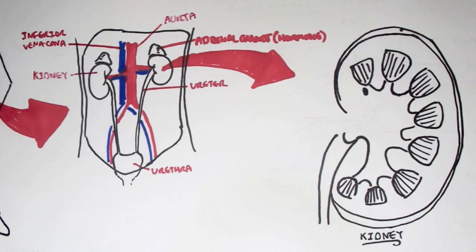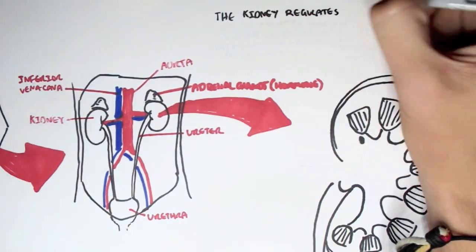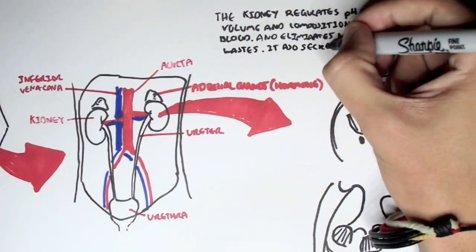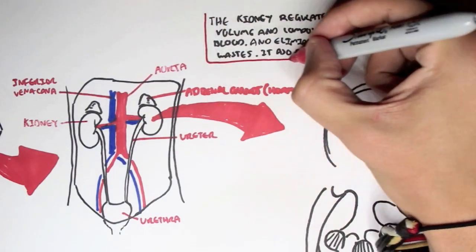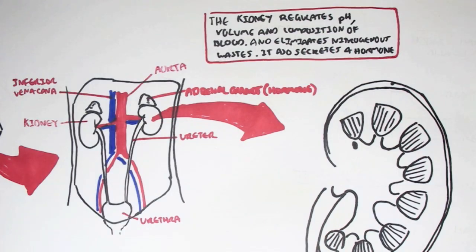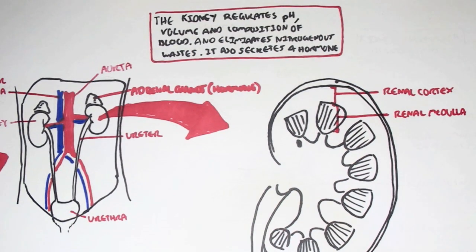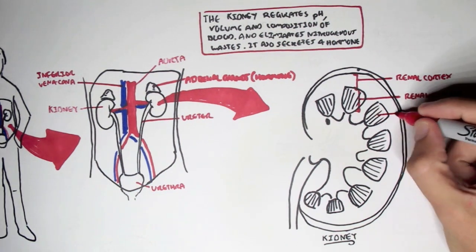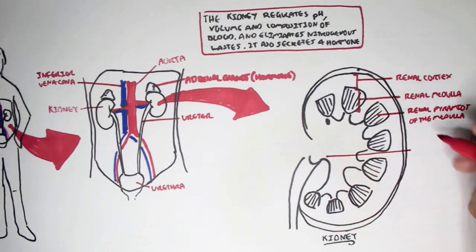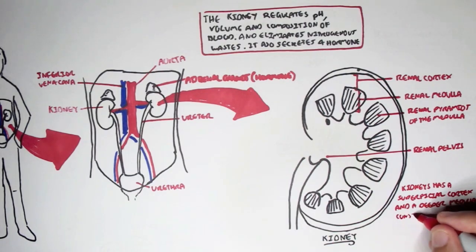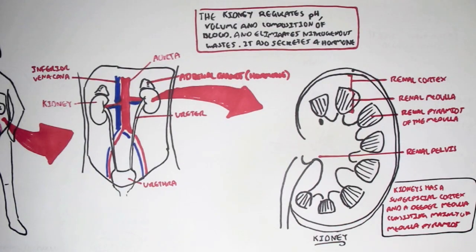We're looking at the left kidney here with a cross-sectional view. We know that the kidney produces urine, but why does it produce urine? It does this because the kidneys regulate the pH, the volume, and composition of the blood. It also eliminates nitrogenous waste via urine, and it also has another function in that it secretes a particular hormone, erythropoietin, which will not be discussed in this video. The main structures of the kidneys are the renal cortex - the outer part - the renal medulla - the inner part - the renal pyramids of the medulla, and then the renal pelvis, which connects to the ureter. So the kidneys have a superficial cortex and a deeper medulla consisting mainly of medullary pyramids.